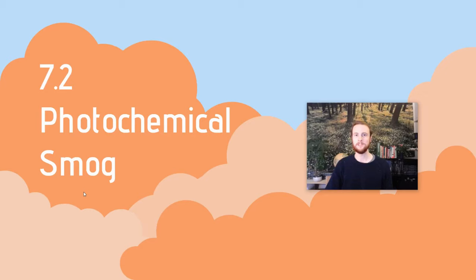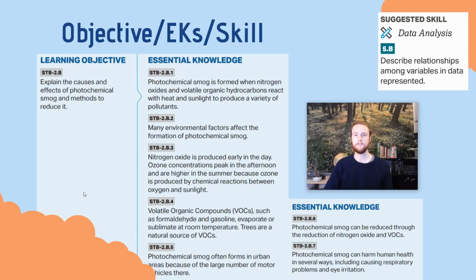Hey everybody, it's Mr. Smedes, and welcome to APE's video notes for topic 7.2, which is photochemical smog. Our objective for the day is to be able to explain the causes and effects of photochemical smog, as well as methods to reduce it. The skill we'll practice at the end of today's video will be describing relationships between different variables in a set of data.